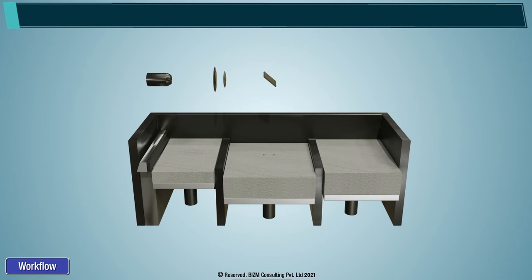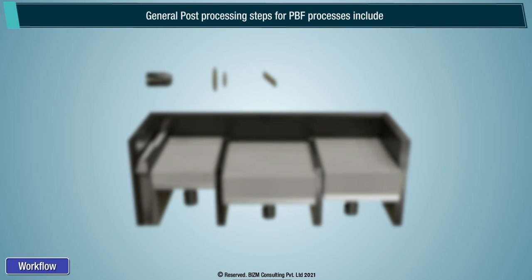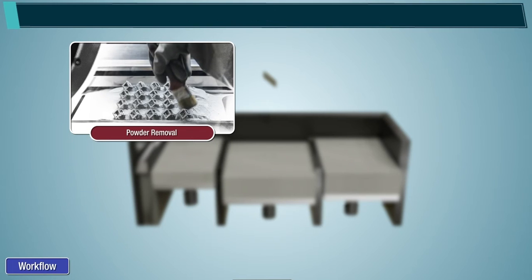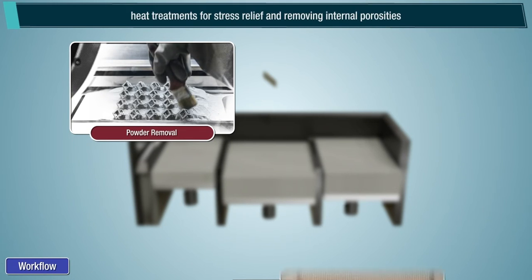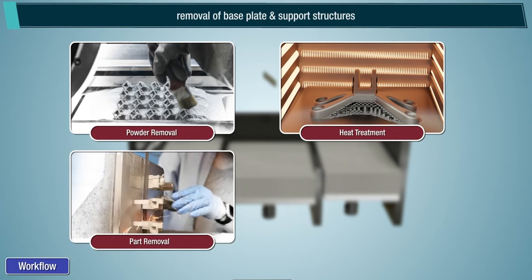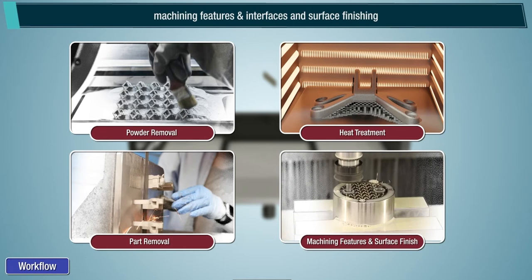General post-processing steps for PBF processes include: powder removal; heat treatments for stress relief and removing internal porosities; removal of the base plate and support structures; and machining of features, interfaces, and surface finishing.